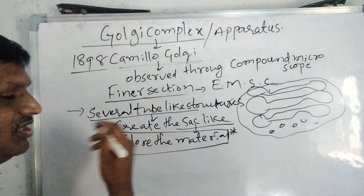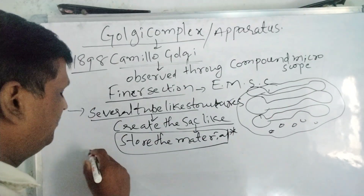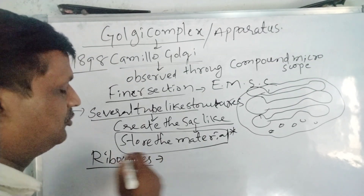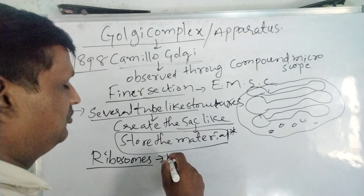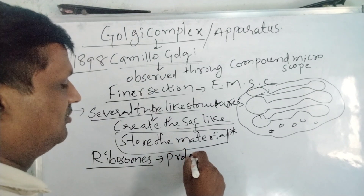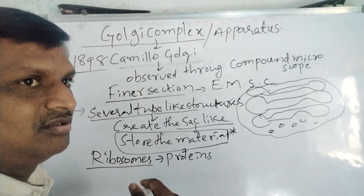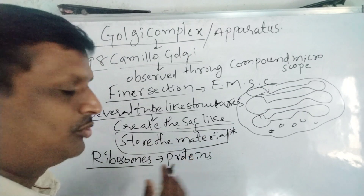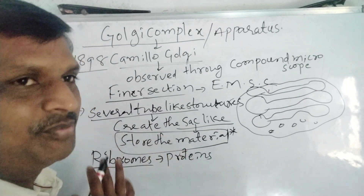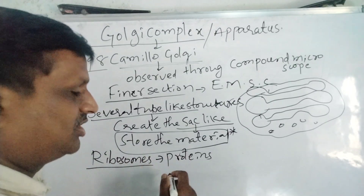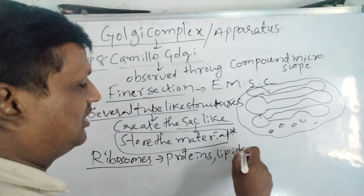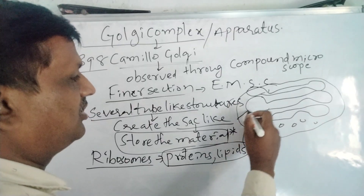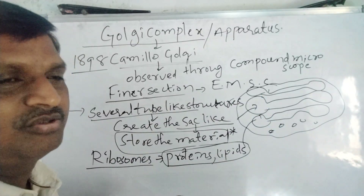What types of materials can be stored? Ribosomes on the rough endoplasmic reticulum produce proteins. Smooth endoplasmic reticulum deals with lipids. Different types of substances — proteins, lipids, and others — are stored in the Golgi complex.